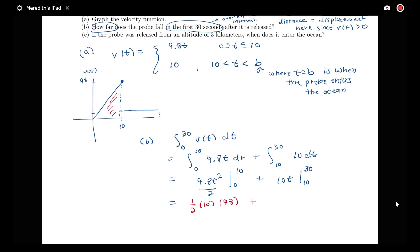The area then of this piece here, well, this is a rectangle with height 10. If I'm going up to 30 seconds here, this would be 10 times 30 minus 10 or times 20. So we're looking at 980 divided by 2, which is 490 plus 200. So we have this total distance that this probe is going to fall in the first 30 seconds of 690 meters.